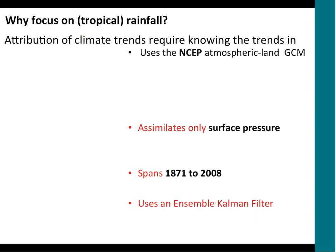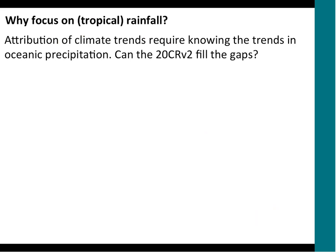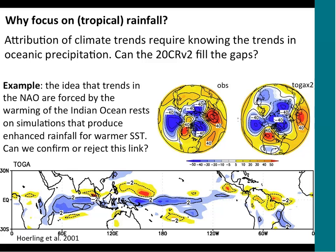Why focus on tropical rainfall? Rainfall in general and tropical rainfall in particular is extremely hard for models. My motivation comes from the fact that if we want to know where climate trends are coming from — whether attributable to anthropogenic or natural variability — we really need to know what oceanic precipitation did during the course of the 20th century. For example, a paper from Hurrell et al. aimed to attribute trends in the NAO and European climate to trends in Indian Ocean precipitation — but there's no way to confirm this chain of events without knowing what Indian Ocean precipitation did.